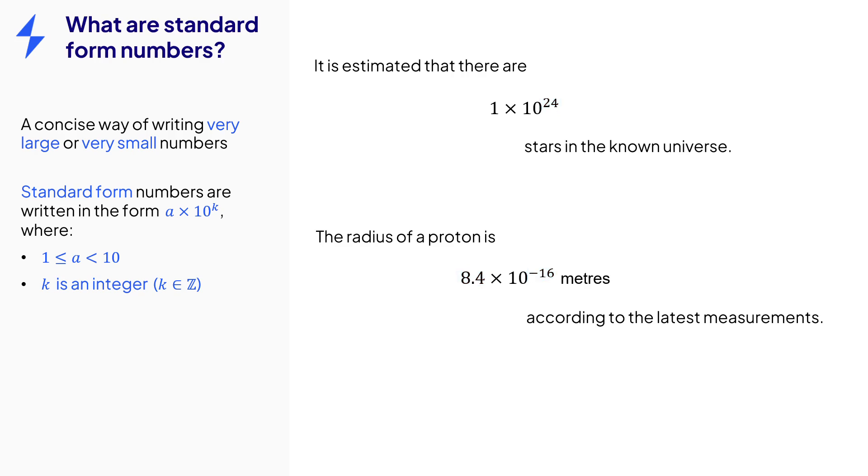And let's also remember what these numbers mean. So 1 times 10 to the power of 24, with the positive power of 10, that means 1 multiplied by 10 24 times. Or 8.4 times 10 to the negative 16, with the negative power of 10, that means 8.4 divided by 10 16 times.